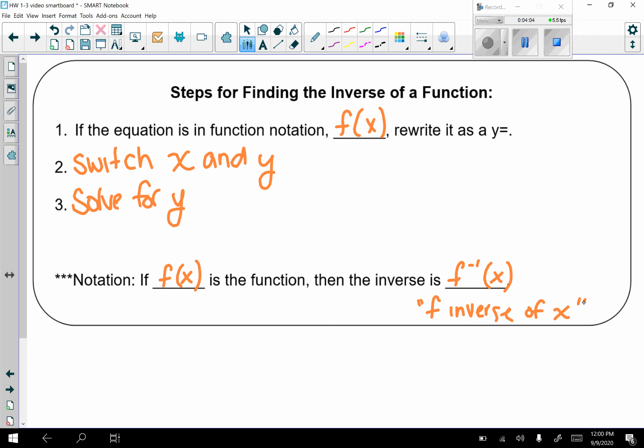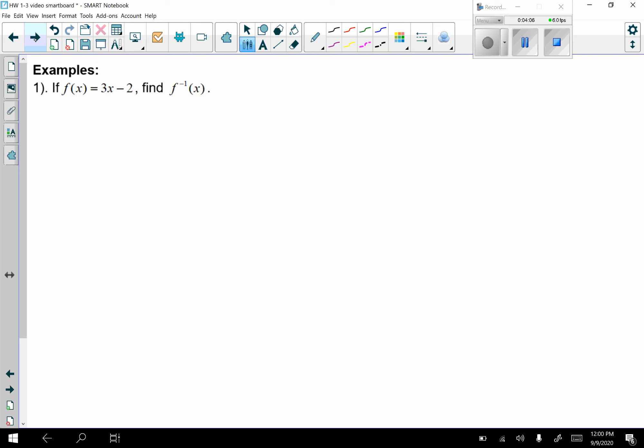Let's look at some more examples. If f(x) equals 3x minus 2, find f inverse of x. So just remember this means inverse. So step 1 is to rewrite as a y equals. So y equals 3x minus 2. Step 2 is to switch x and y. x equals 3y minus 2. Everyone should always be able to do these first steps. And these first two steps will always be the same, regardless of the type of function.